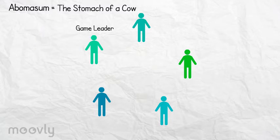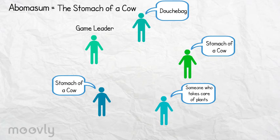Everyone except the game leader chooses a meaning of which he thinks it is the correct one. When everyone has made his choice, the participants can now earn points.